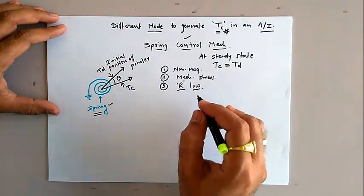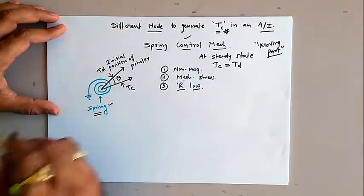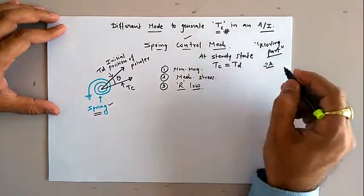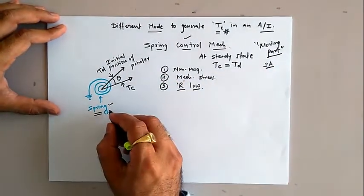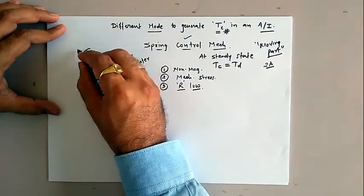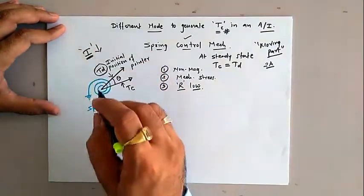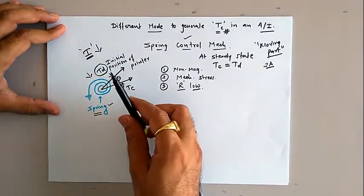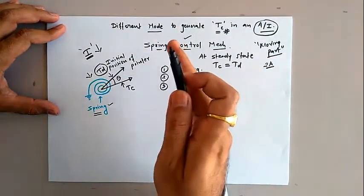The spring must offer very low resistance because analog instruments are designed such that whatever current flows through the moving part also flows through the corresponding spring. For example, in a PMMC type instrument, if the moving coil carries 2 amperes, the same 2 amperes flows through the spring. Since the deflection torque is proportional to the input current, if you select a spring with very high resistance, it will reduce the input current magnitude, thereby reducing the deflection torque. This means the pointer will not indicate the exact value of the unknown quantity — the instrument will read less than the actual value.